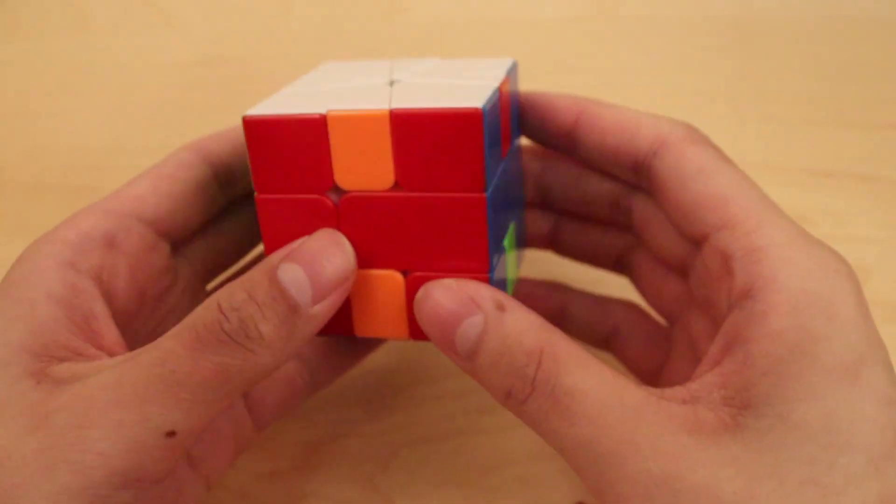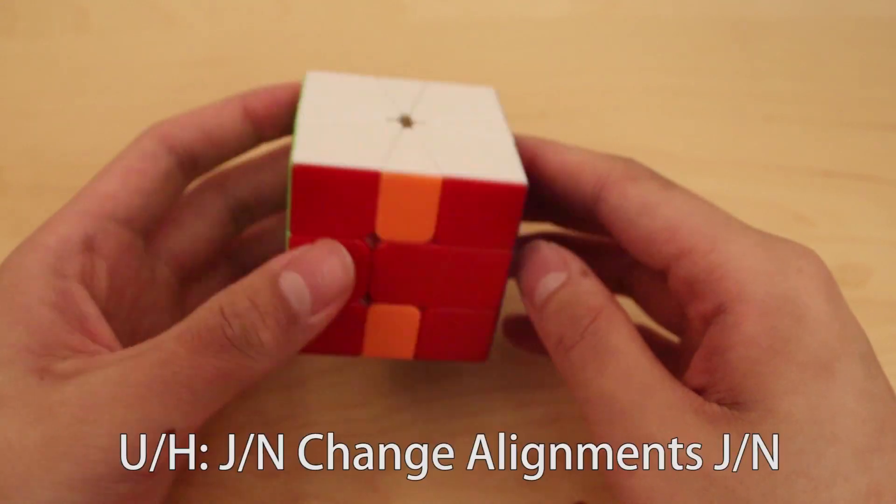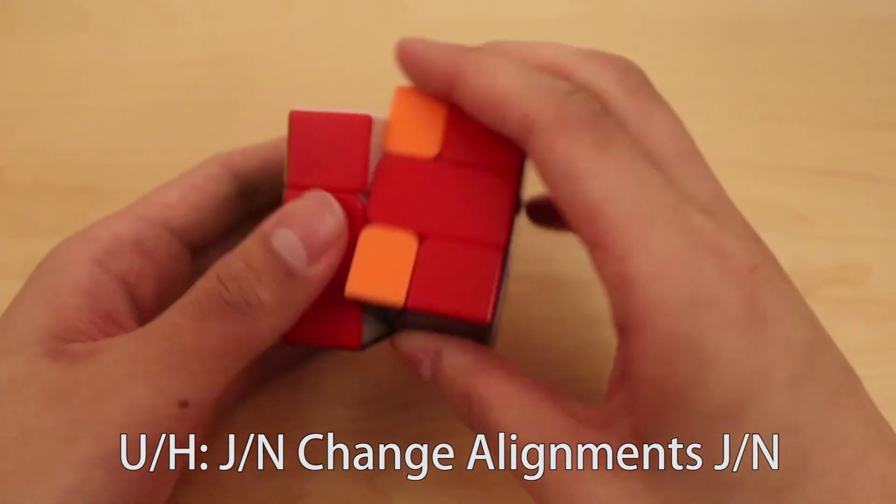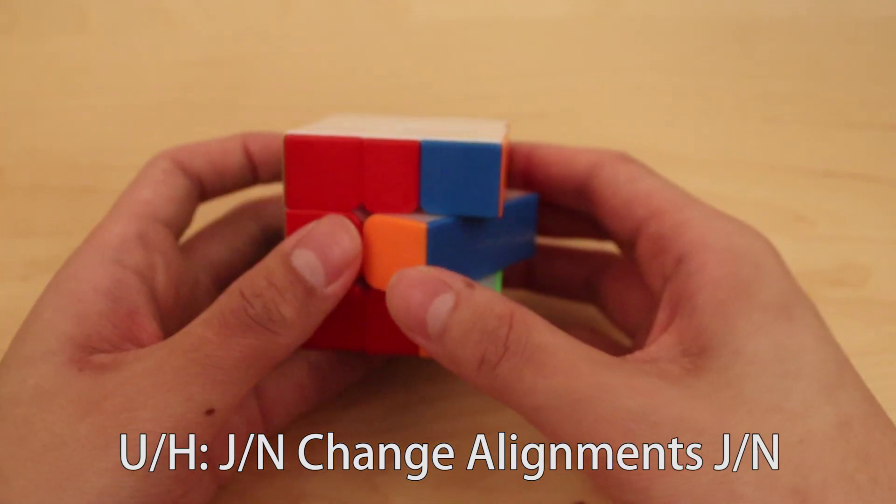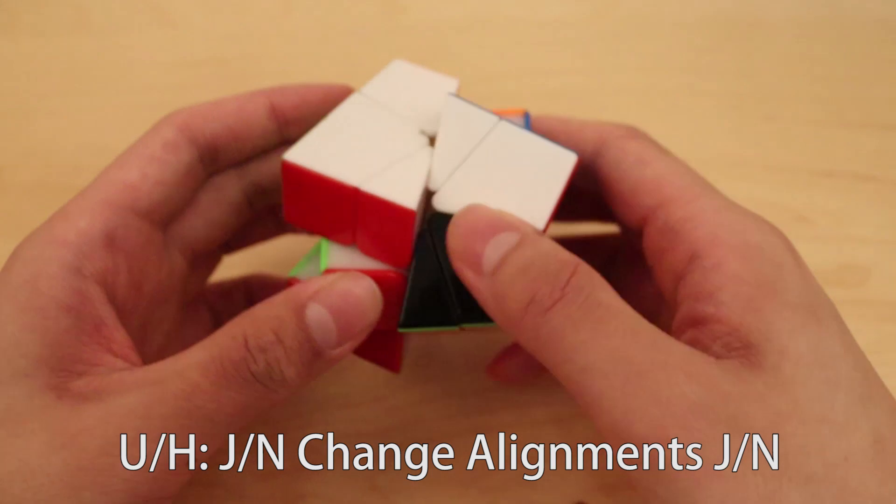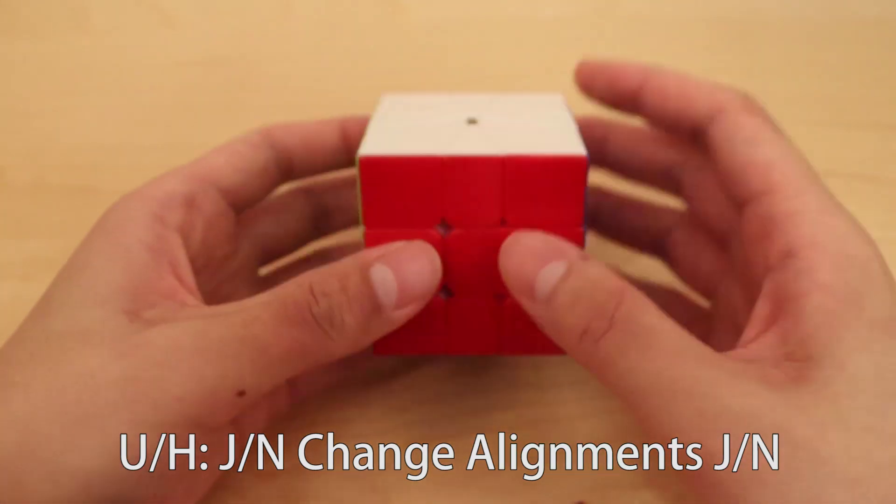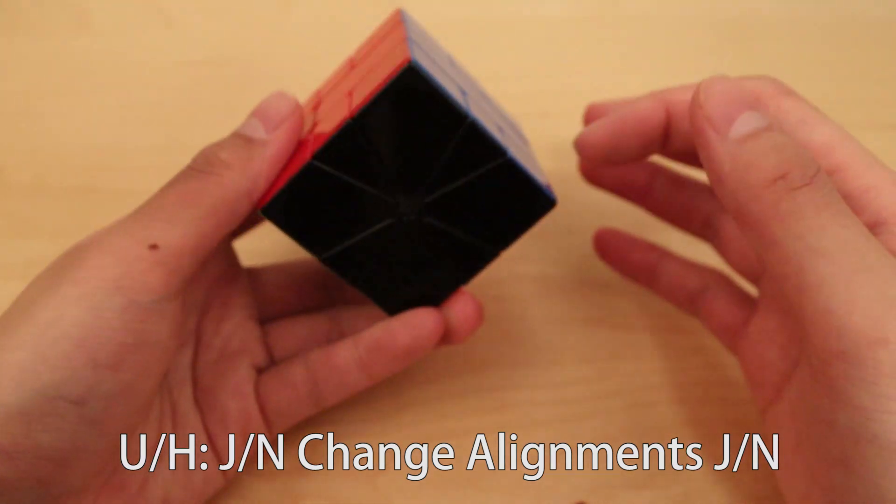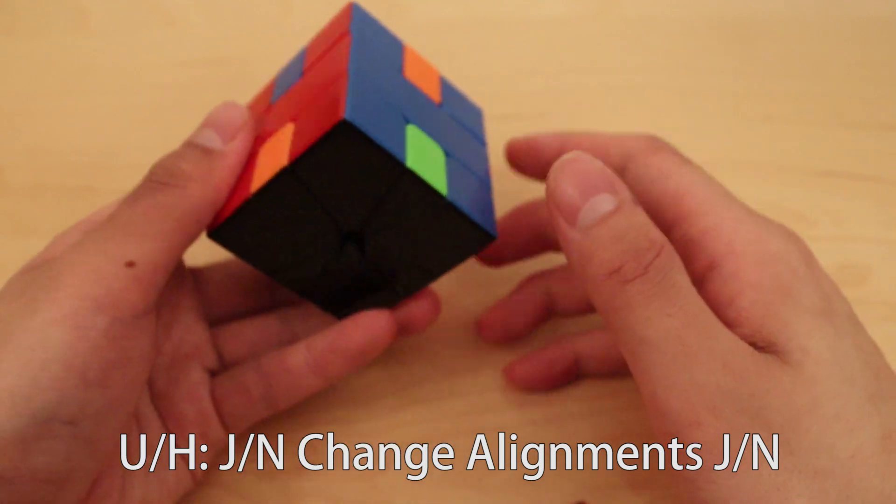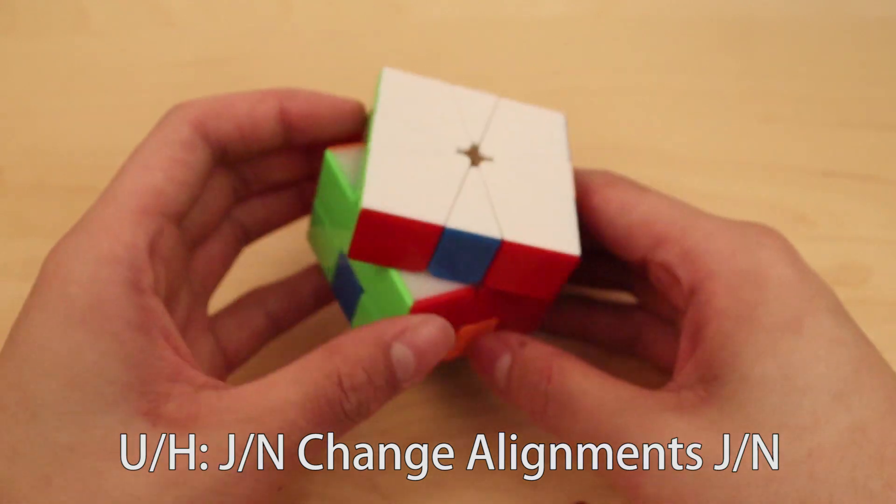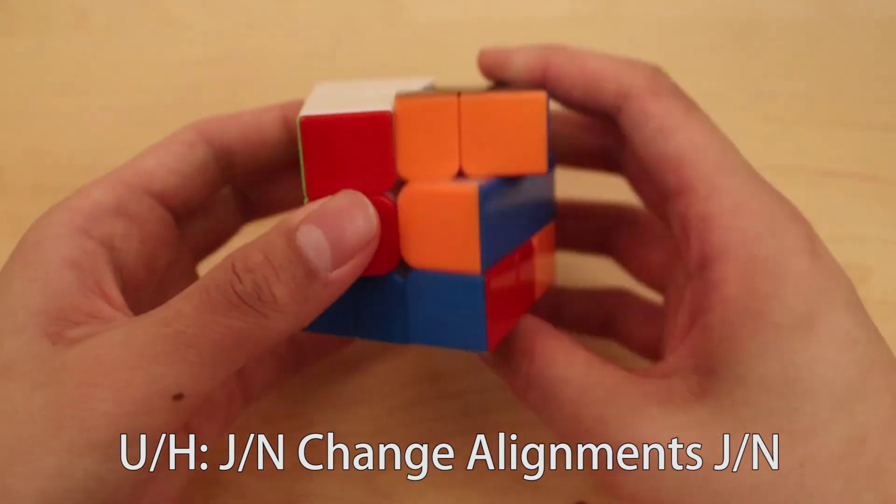Stuff like U-H are also pretty simple to solve. You can do something pretty fun, actually. So for these ones, you can do J-N like this, and then do J-N with the blocks aligned. And that solves the whole EP pretty nicely. So you can do that from the top and bottom layers for any combo of U or H. The thing for U-perms though, is that if you have the other U-perm like this, you have to misalign it first sometimes.